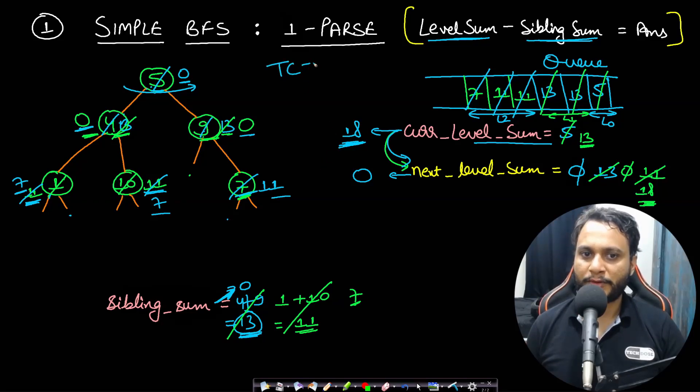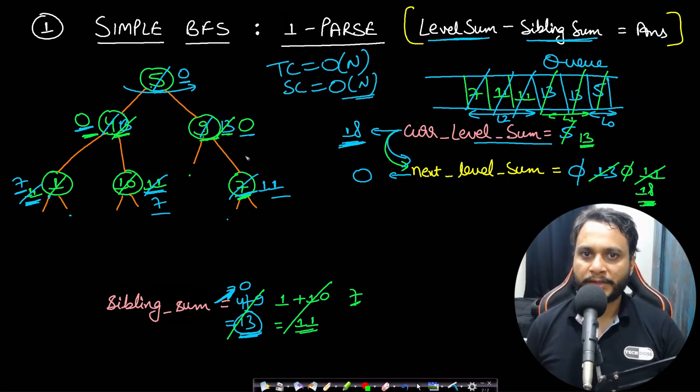The time complexity is O(n) and the space complexity is O(n) as well because of the queue. Let's now look at the code.